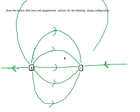So in green, what we have here are the field lines. They represent the force. We want to draw the field lines and the equipotential surfaces. So let's go to the equipotential surfaces.